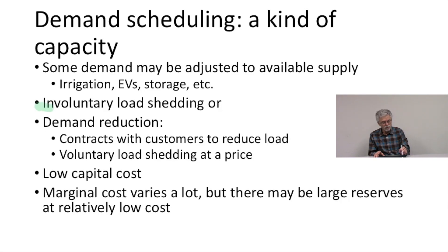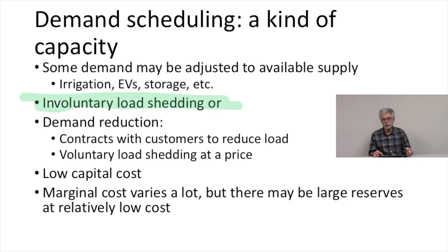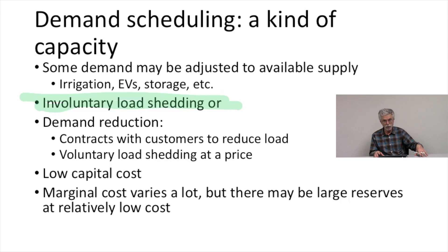Another form of demand scheduling is involuntary load shedding. Involuntary load shedding doesn't have an explicit cost associated with it, but everyone realizes that load shedding has a very substantial actual cost in terms of the changes that businesses make to their operations to accommodate the possibility of load shedding, including the building of backup power supplies.